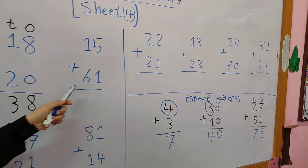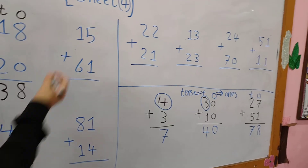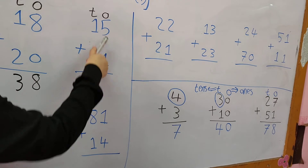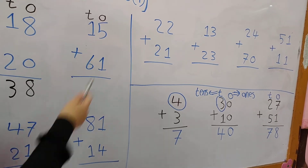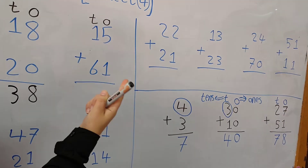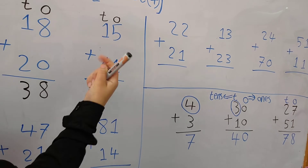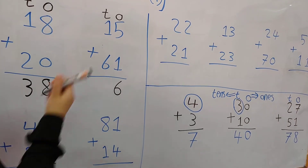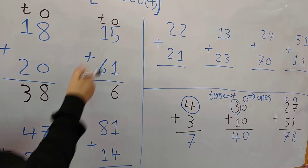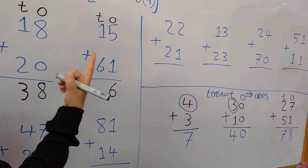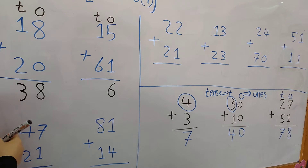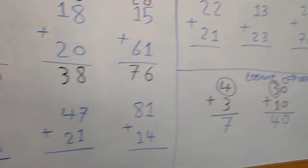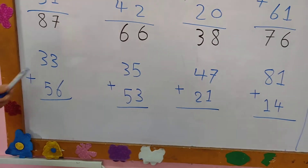15 plus 61. The first thing: write O and T. In the 1's column: 5 plus 1. I put 5 in my mind and 1 on my fingers and count after 5. After 5: 6. In the 10's column: 1 plus 6. I put 6 in my mind and 1 on my fingers and count after 6. After 6: 7.